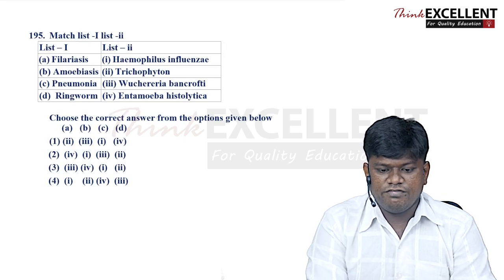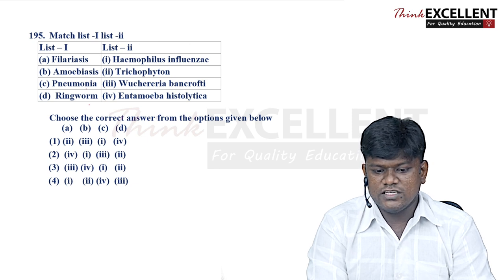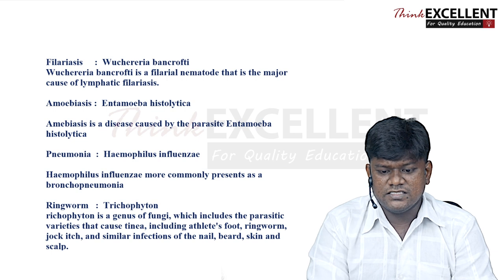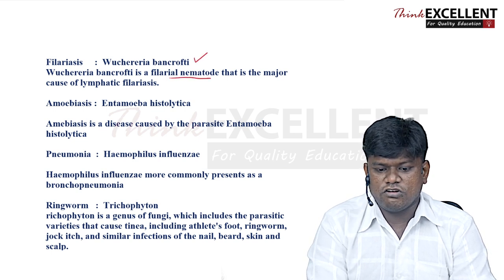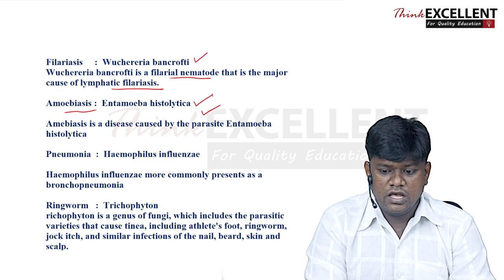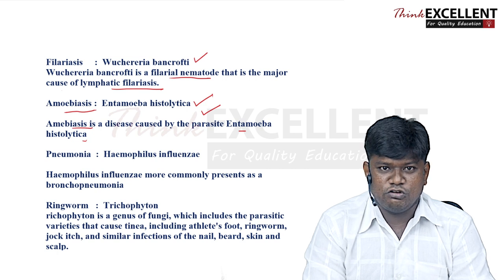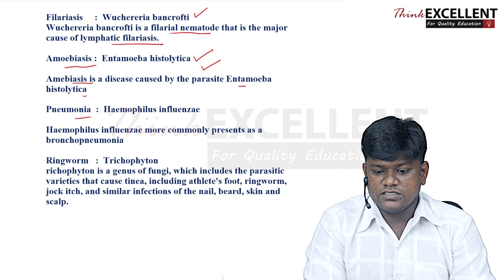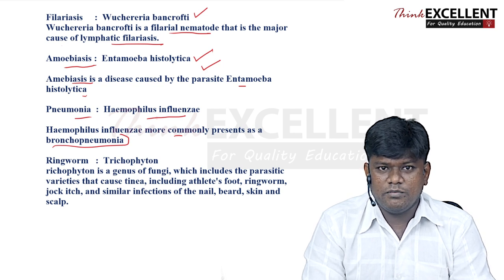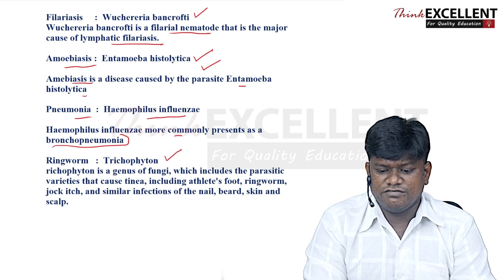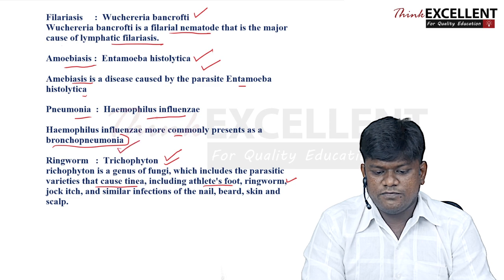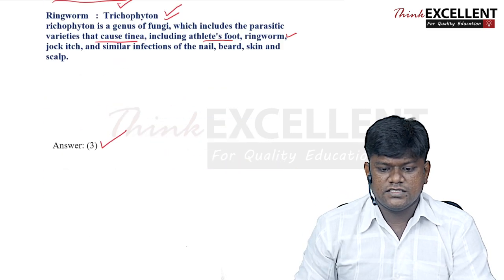Question 195: match diseases — filariasis, amoebiasis, pneumonia, ringworm — with causing organisms. Filariasis is caused by the filarial nematode Wuchereria bancrofti (lymphatic filariasis). Amoebiasis is caused by Entamoeba histolytica (parasitic protozoan), with symptoms of vomiting and nausea. Pneumonia is caused by Haemophilus influenzae (bronchopneumonia). Ringworm is caused by Trichophyton, a genus of fungi. Option 3 is the right answer.